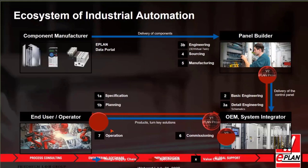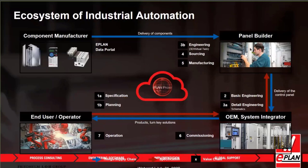Once the project is complete, you can upload it to the cloud in an environment like ePulse, where every participant can easily access, visualize, and use the project for redlining. The end user can use it for maintenance — if there's a fault, they can quickly access project information and fix the problem. That's the ecosystem of industrial automation from an ePlan perspective, where component manufacturers, panel builders, OEMs, system integrators, and operators work together on the same project, sharing the same data.